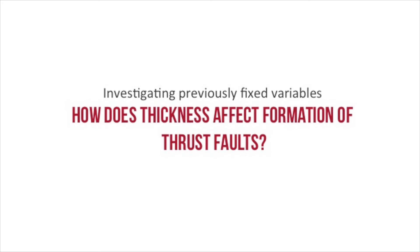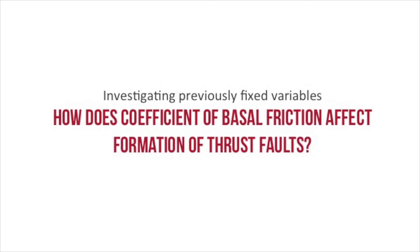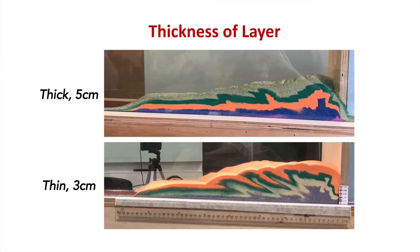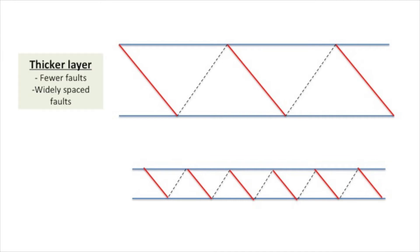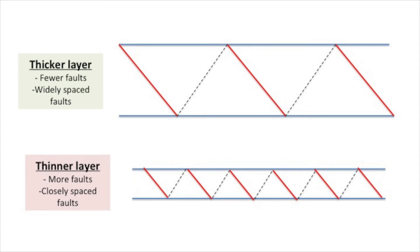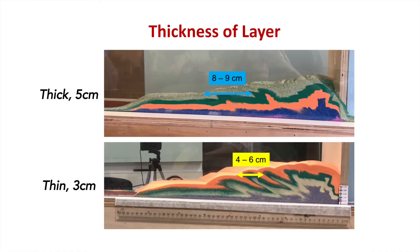We also investigated the effect of the variables we fixed previously — thickness of the sand layer and coefficient of friction. To investigate the effect of thickness, we compared our results to an experiment with a thinner layer of sand, or 3 cm, keeping all other variables constant. Thicker layers result in a smaller number of faults that are more widely spaced, while thinner layers have a larger number of faults that are more closely spaced. We concluded that this may be explained by faults propagating over a longer distance for thicker layers.